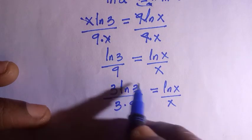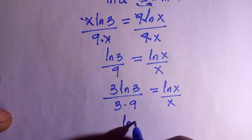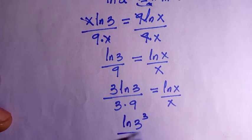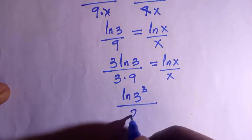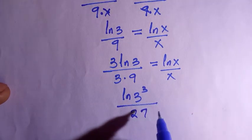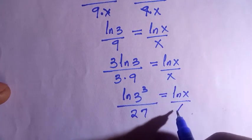Let's apply it here. The 3 will come up as the power, so we have ln(3^3)/27, which equals ln(x)/x.